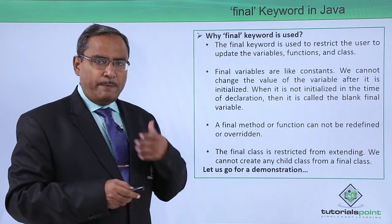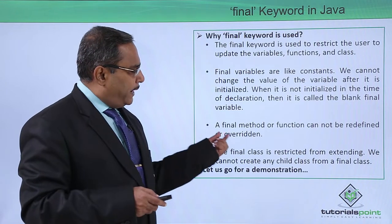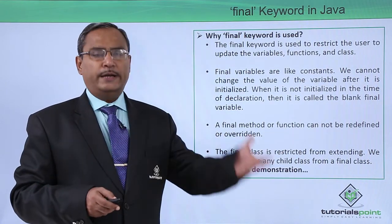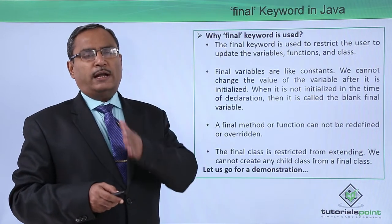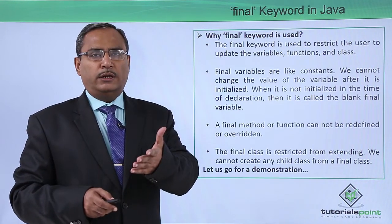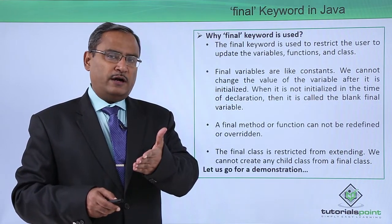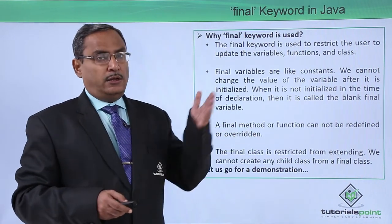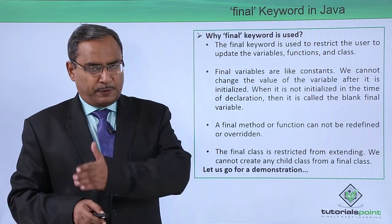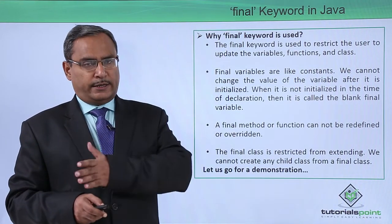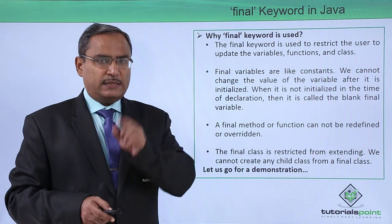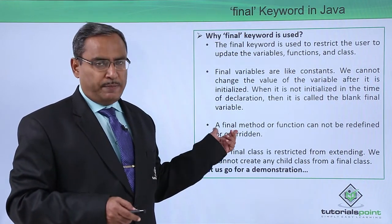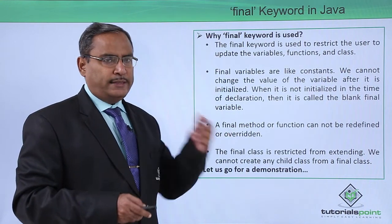Regarding the final keyword with a method: a final method or function cannot be redefined or overridden. Function overriding is not possible after doing inheritance from the base class to the derived class, because the method defined with the final keyword in the base class cannot be overridden again in the derived class.